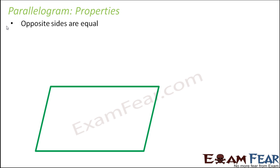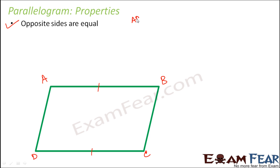In a parallelogram, the opposite sides are equal. Let us name the parallelogram to make it easier. When we say opposite sides are equal, we mean AB is equal to CD and also AD is equal to BC.